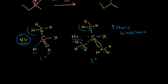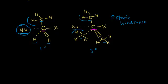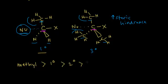Ranking reactivity via SN2 mechanism: a methyl alkyl halide has the least steric hindrance and reacts fastest. A primary alkyl halide also reacts well. A secondary alkyl halide reacts much more slowly, and a tertiary alkyl halide reacts much, much slower via SN2. Keep steric hindrance in mind when determining whether a reaction proceeds via SN1 or SN2 — the next few videos will focus exclusively on that.